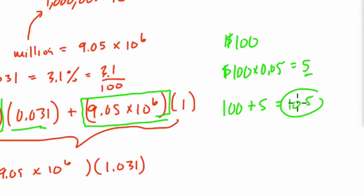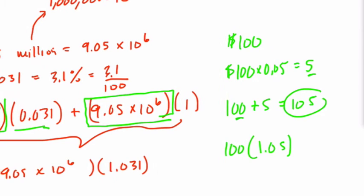That would be your answer if you grow 5%. So essentially, you took 100, right? And you multiply that by 5% and then added it to 100% of the original amount. It's the same as multiplying 100 by 1.05, which is 105%. Just like here, we have 103.1% of the original.